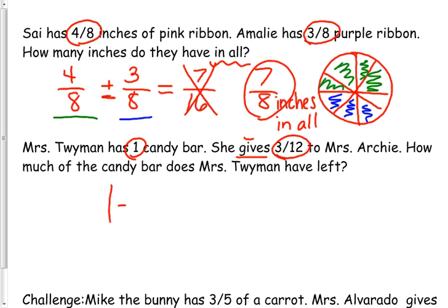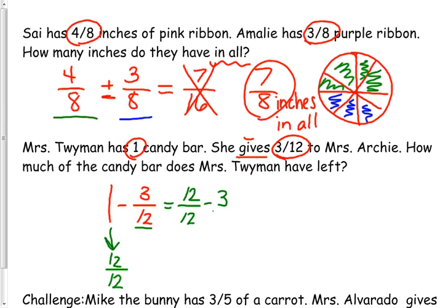So I have 1 minus 3/12. But I'm concerned about this 1 — what do I do with that? It's supposed to be a whole. It's 1 whole. But how do I subtract 1 whole when it's not a fraction? It's going to become 12/12, because we look at the denominator we have and we need the whole pack. So I'm going to rewrite that as 12/12 minus 3/12.